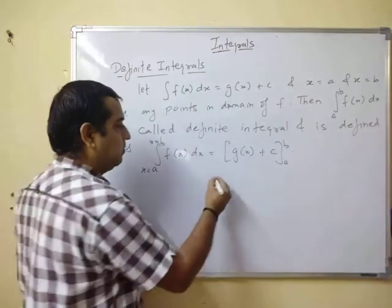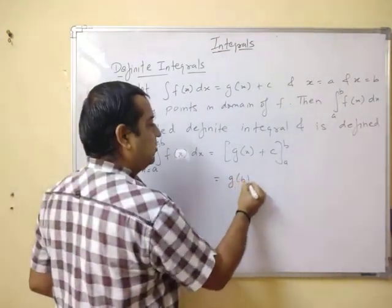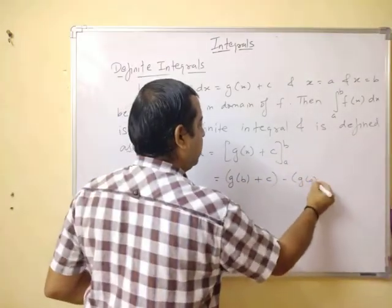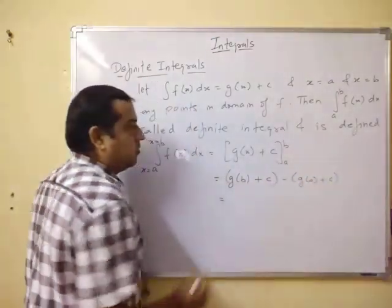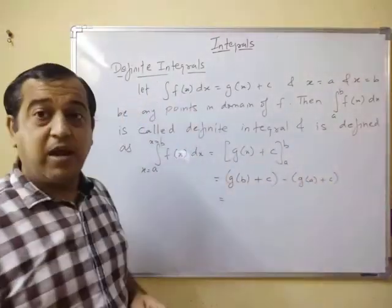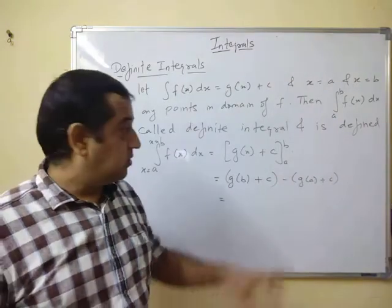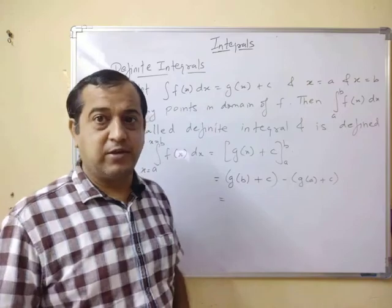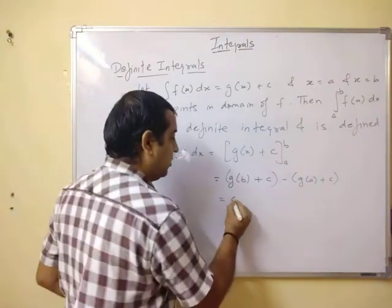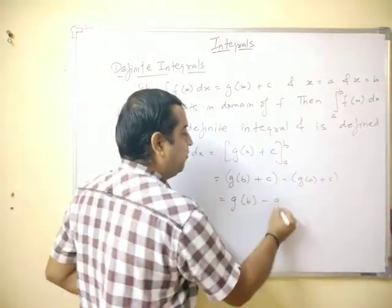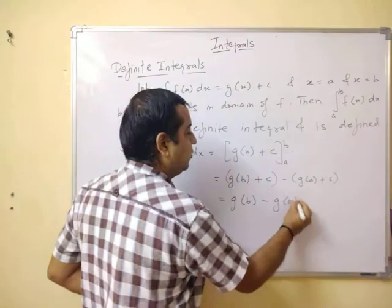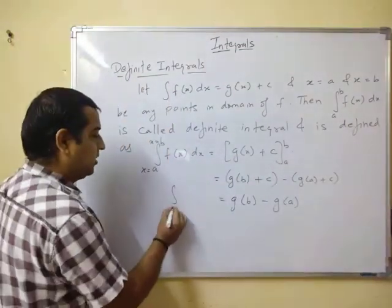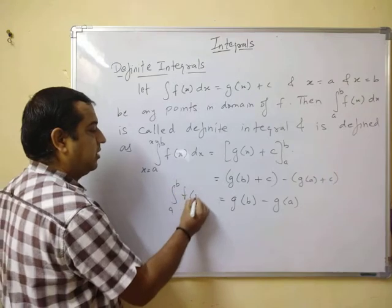This gives g(b) plus c minus g(a) plus c. The constant term remains as it is because there is no x term. So the constants c and c get cancelled, and you are left with g(b) minus g(a). This is the definite integral.